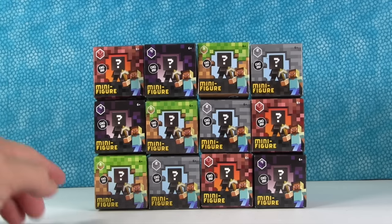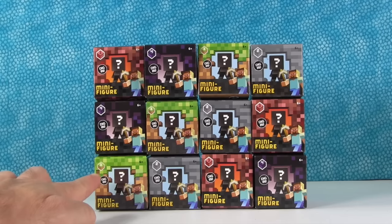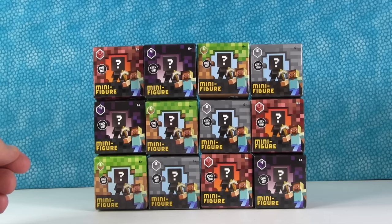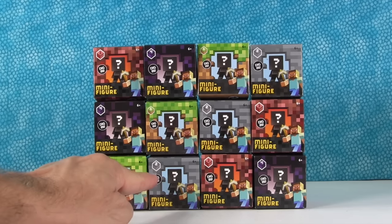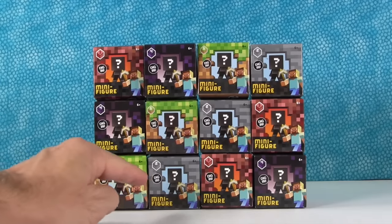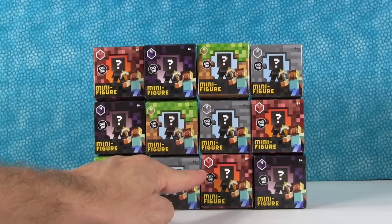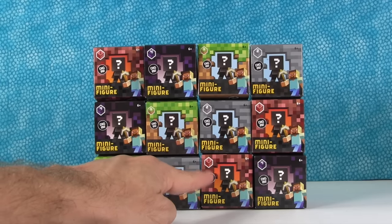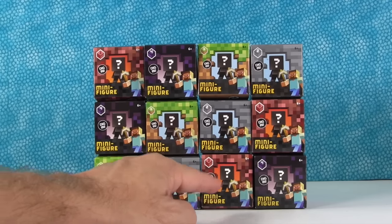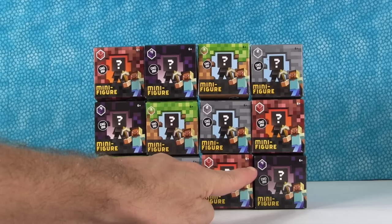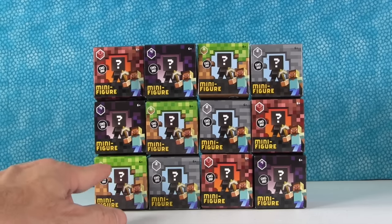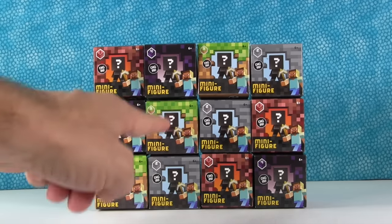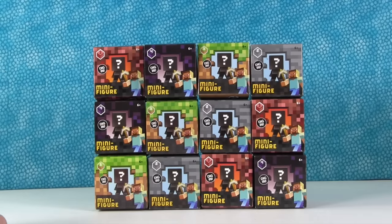Alright, so there currently are four different series of Minecraft blind boxes. There's series number one the grass series in the green box, series number two the stone series in the gray box, series number three the nether rack series in this red box, and series number four are in this black and purple box. That's the obsidian series, and that's brand new. So we have three different figures from each series for a total of 12 blind bags in all.